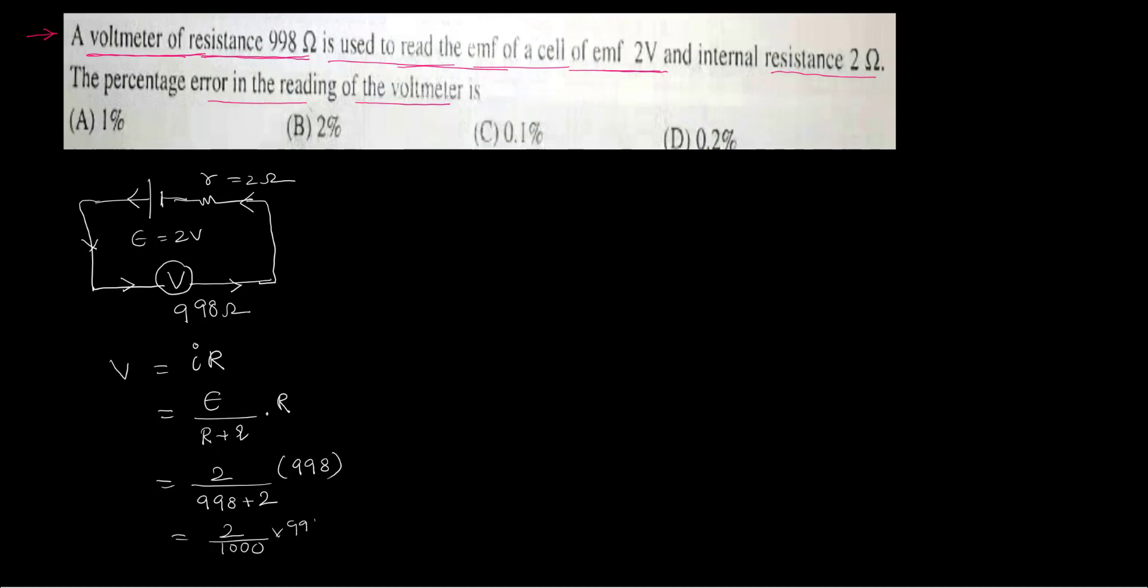Times 998. So if you measure that value again, that is 2 times 998 times 10 to the power minus 3. So let us calculate this. 2, 8, 16, 2, 9, 18, and 1, 1, 19, 2, 9, 8, and 1, 1, 19. So that is 9.96 volts because there is a 10 power minus 3 is there.